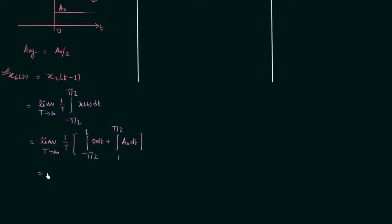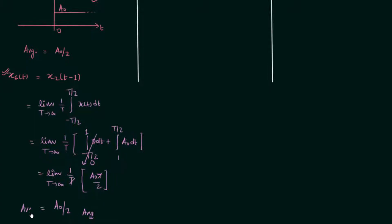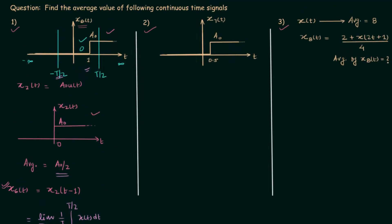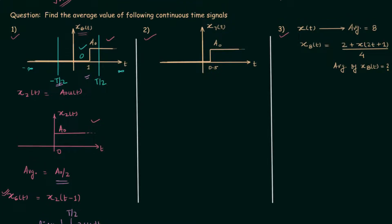When you solve the integration you will have: limit T→∞ of (1/T) × [a0·T/2]. The T's cancel out and since there is no remaining T in the expression, there is no need to apply the limit, so the answer is simply a0/2. This is the average value of signal x6t, and the average value of signal x2t is also equal to a0/2. So we can see that there is no effect of time shifting on the average value.